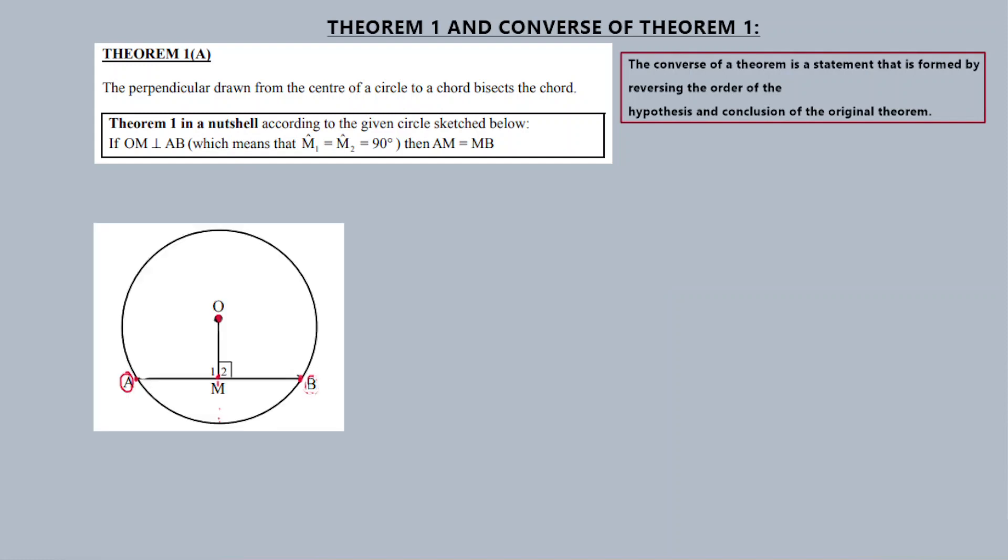I'm given a circle like this one. The perpendicular line drawn from the center of a circle to a chord bisects the chord. Theorem 1, in a nutshell, according to the sketch given below, if OM is perpendicular to AB, which means that M1 is equal to M2, they are both equal to 90 degrees, then AM is equal to MB.